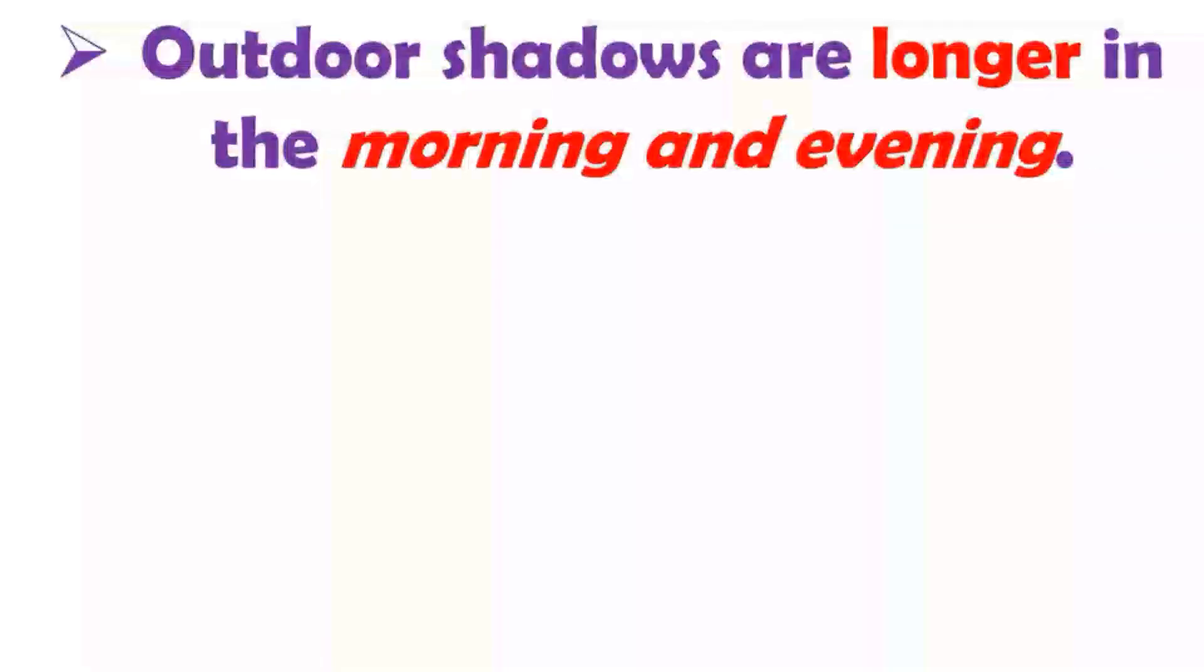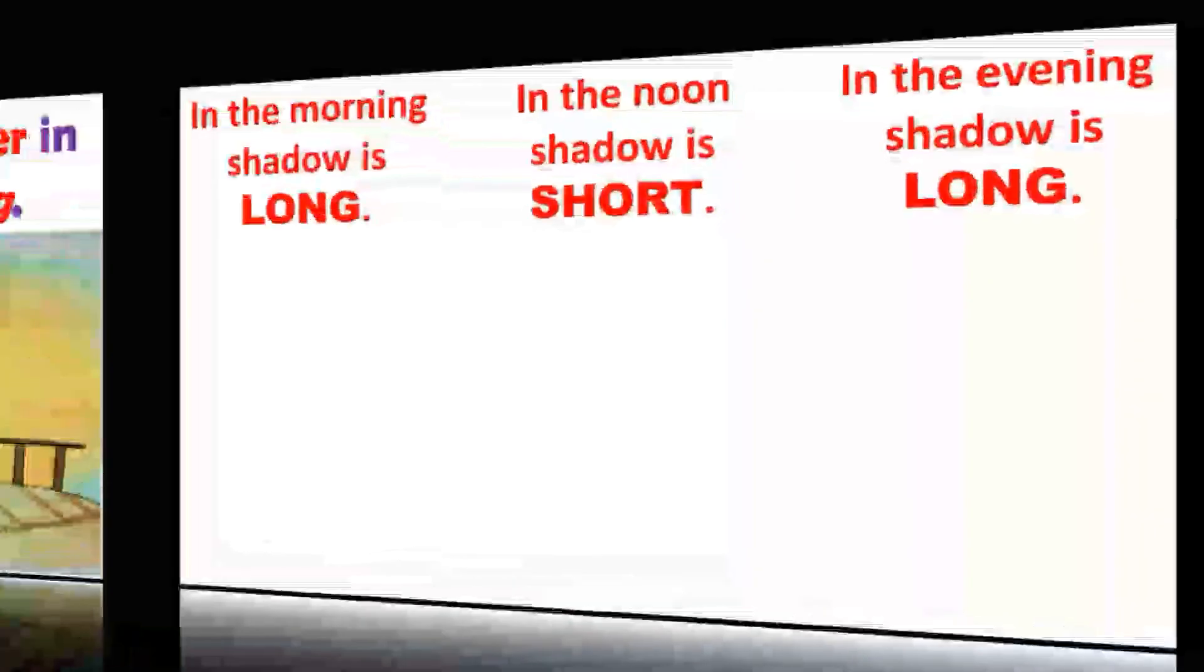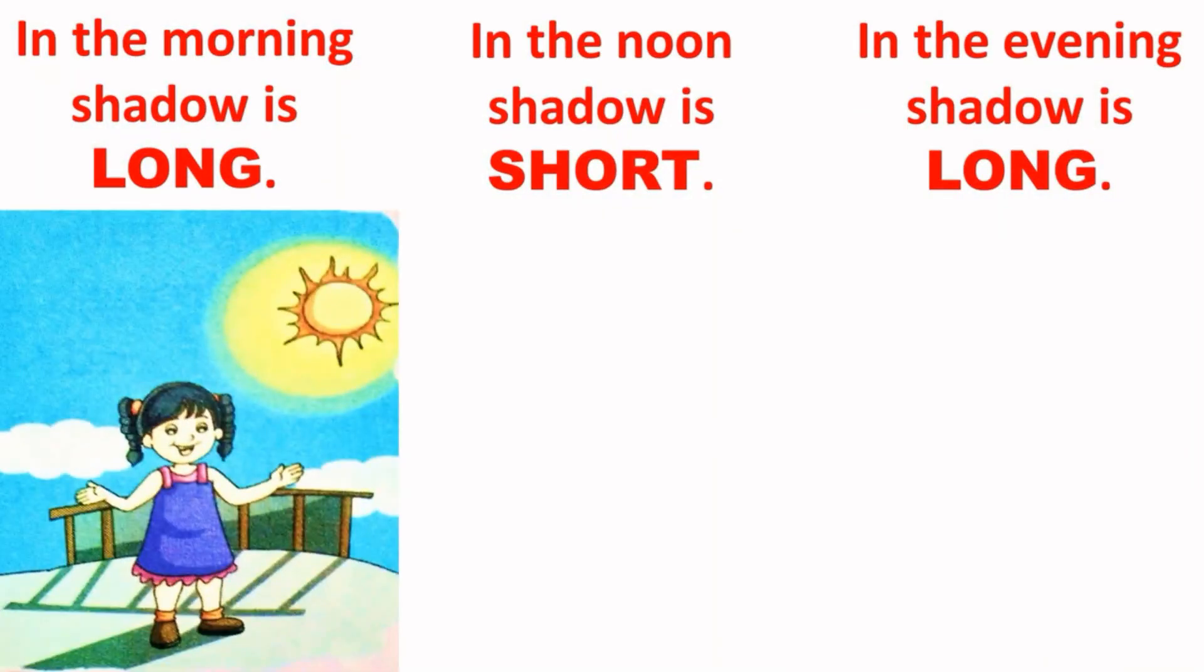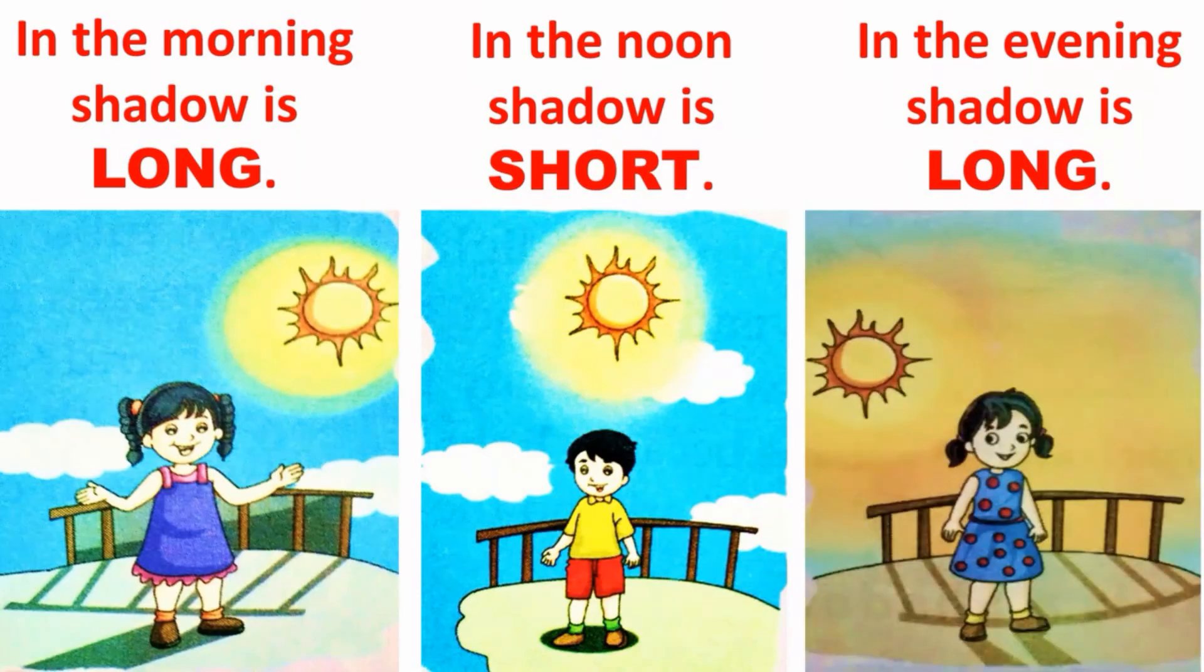Outdoor shadows are longer in the morning and in the evening. It means the size of a shadow changes from time to time during the day due to change in the position of sun. Like in the morning, shadow is long. In the noon time, shadow is short. And again in the evening, shadow is long. I hope you understand here.